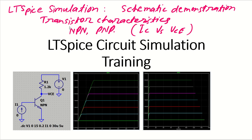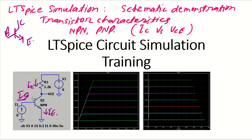Namaskar, my dear friends. Let's talk about transistor characteristics. We have an NPN transistor with base, collector, and emitter. There is a bias current IB, collector current IC, and emitter current IE. Based on the variation of IB, the base current, there will be an increment in collector current. As IB increases, IC also increases and gets saturated after some time. We'll simulate this transistor characteristics and also understand PNP.